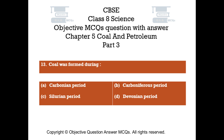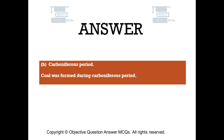Question number 13. Coal was formed during: Option A: Carbonian period. Option B: Carboniferous period. Option C: Silurian period. Option D: Devonian period. The right answer is Option B, Carboniferous period. Coal was formed during the Carboniferous period.